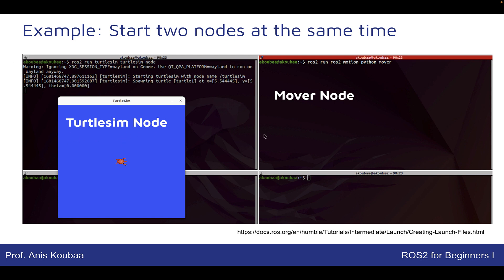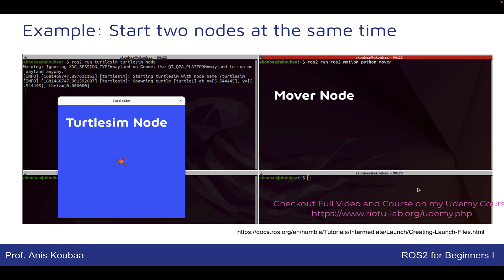Let's consider a simple example where we have just two nodes. We have already run the TurtleSim node using the command ros2 run turtlesim turtlesim_node, and we have also developed the mover node using the command ros2 run ros2_motion_python mover. If we have another node to open, we need to open another terminal. Imagine having four or six nodes to open — it's going to be very cumbersome. So we want to use a launch file to gather all these nodes together and call them with a single ros2 launch command, instead of writing ros2 run in different terminals as the ROS2 project grows in scale.